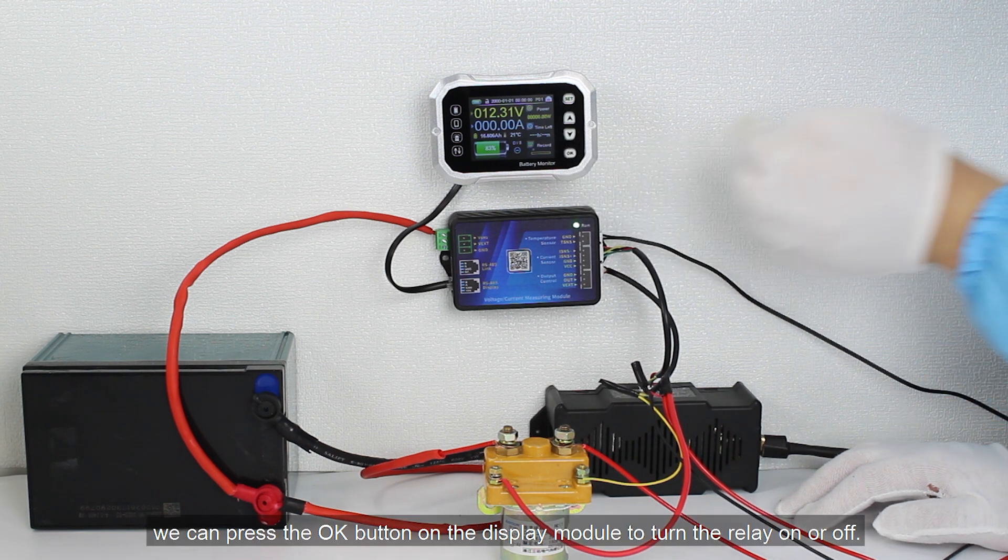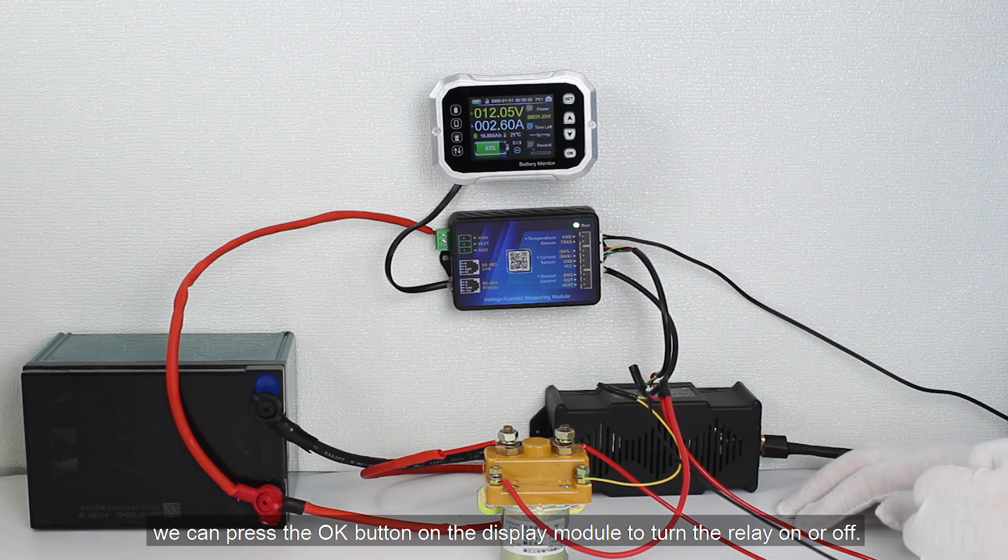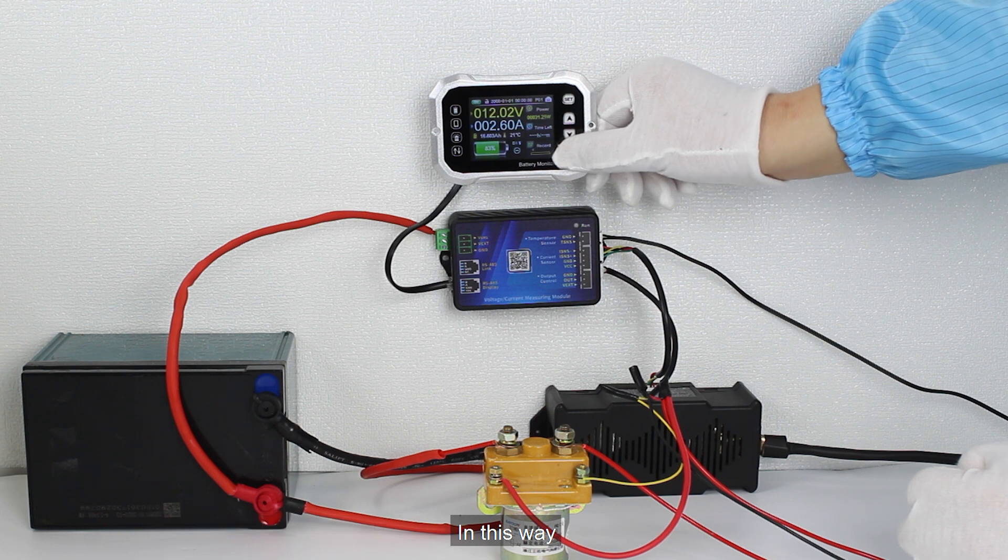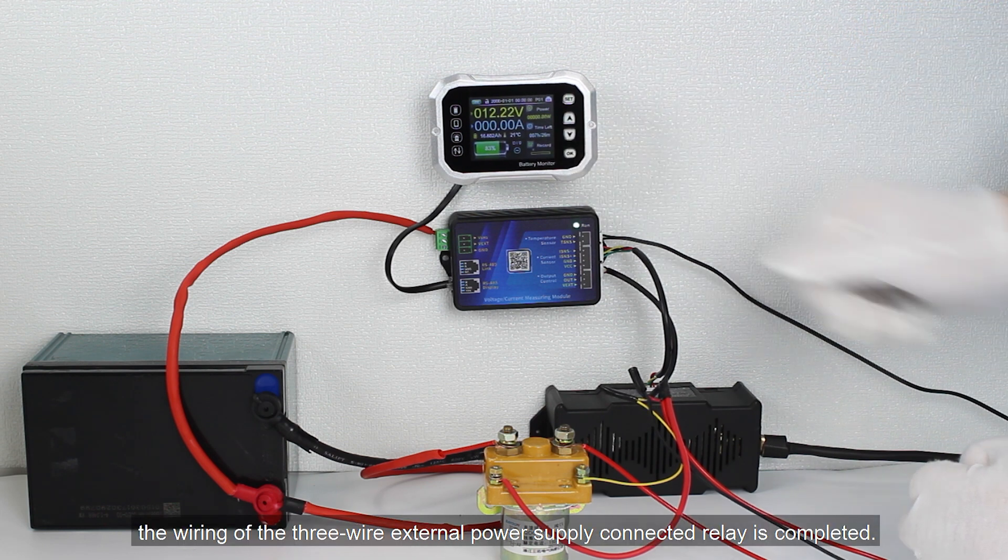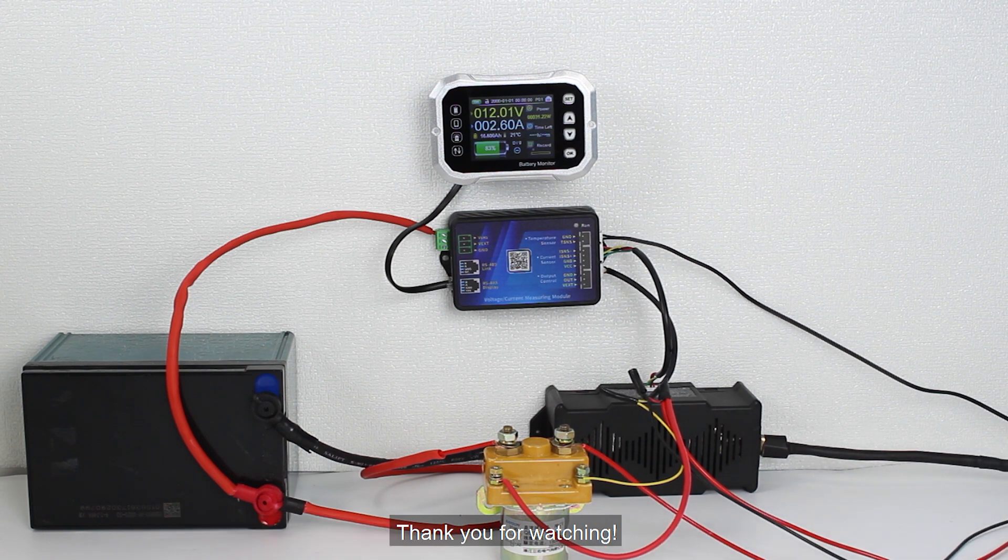Finally, we can press the OK button on the display module to turn the relay on or off. In this way, the wiring of the 3-wire external power supply connected relay is completed. Thank you for watching.